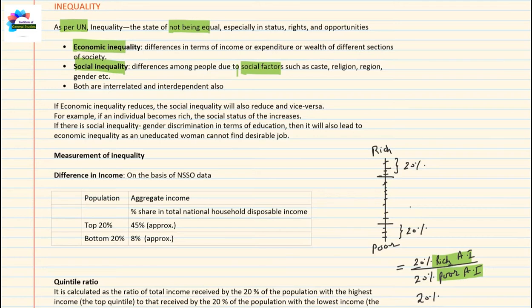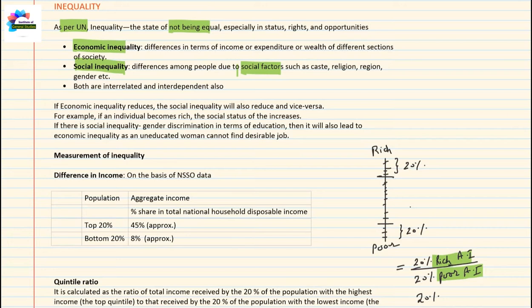This is regional inequality. A migrant or labor worker coming from different states may face regional inequality in the state they are migrating into. Gender inequality occurs when, for example, a girl child is not given good education or is not allowed to work outside the home, creating social inequality.